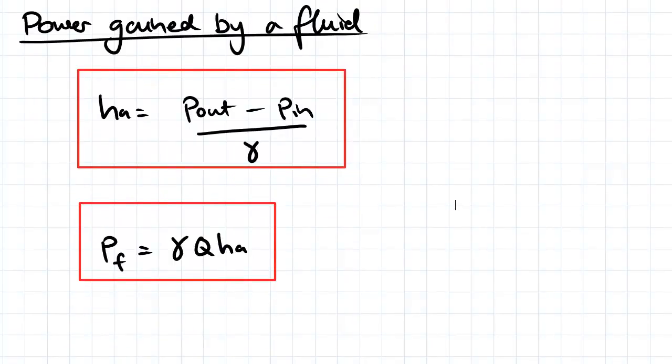In terms of the power gained by our fluid, that's measured as a gain in head, HA. That's approximately equal to—assuming no change in height throughout our pump—the pressure that we get out of our pump minus the pressure that goes in.